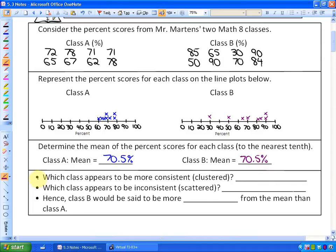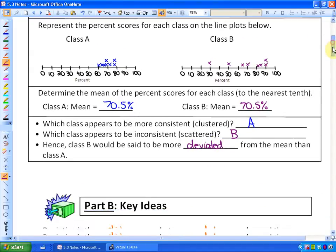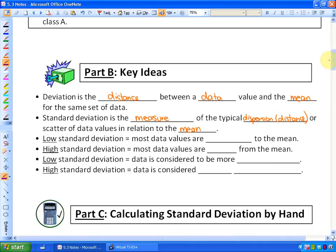Which class appears to be more consistent or clustered? Class A is all between 60 and 80%, so class A appears to be more consistent. Which class appears to be inconsistent or scattered? We have a big range between 30 and 90 in class B, so the answer would be class B. Here's an introduction to the concept of standard deviation. Class B would be said to be more deviated from the mean or separated or dispersed from the mean than class A because they're more scattered. Then we're going to look at how is it related to a number.